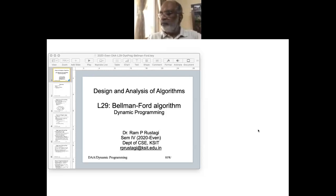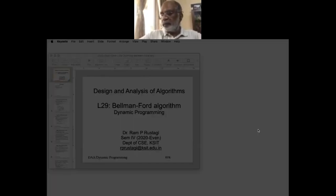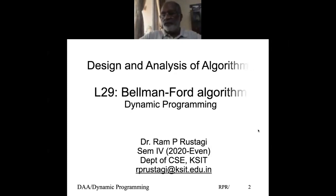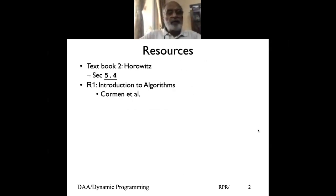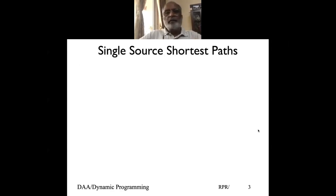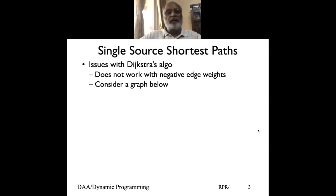We have seen Dijkstra's algorithm to find the shortest path from a single source, and we've also seen the limitation of Dijkstra's algorithm — if there is a negative cycle it does not work. I'll give an example; this example is from Horowitz as well as from Levitin. So let's look at the basic issue with Dijkstra's algorithm.